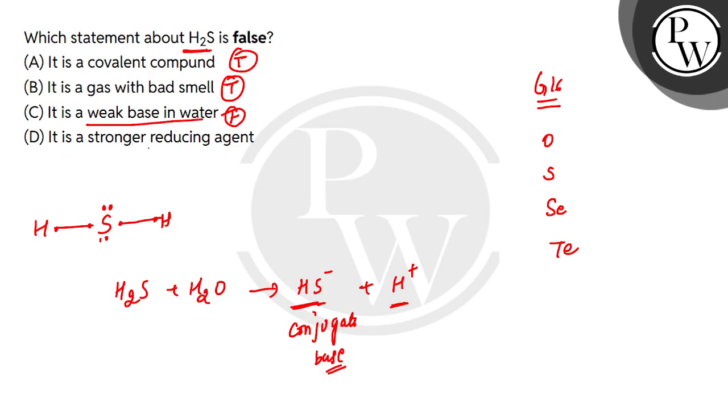In D, it is a stronger reducing agent. Yes, it is right. It is a stronger reducing agent. If you see H2S, this is hydrogen oxidation state is plus 1. Sulfur is minus 2. Sulfur is the range of oxidation state from minus 2 to plus 6. In the valence shell configuration, you can see that there are 6 electrons in valence shell.